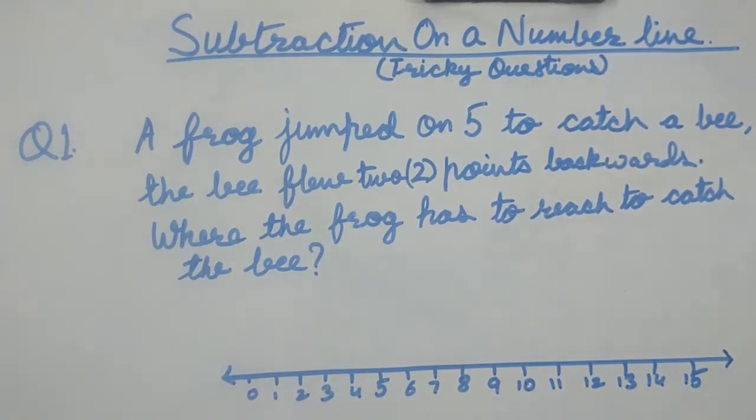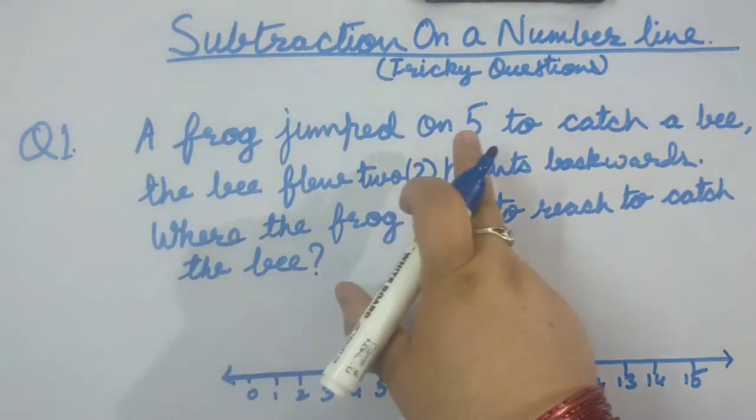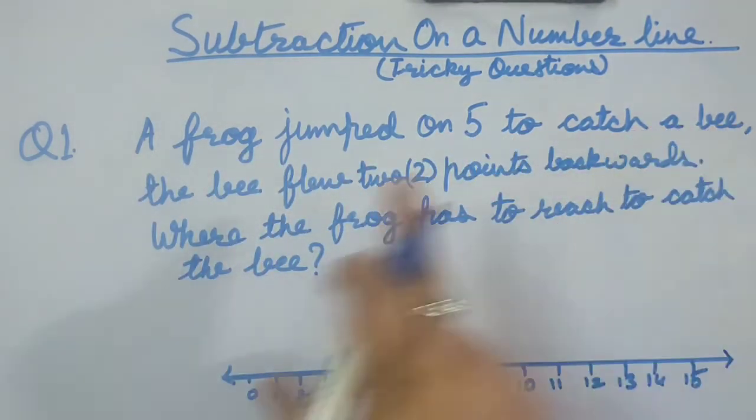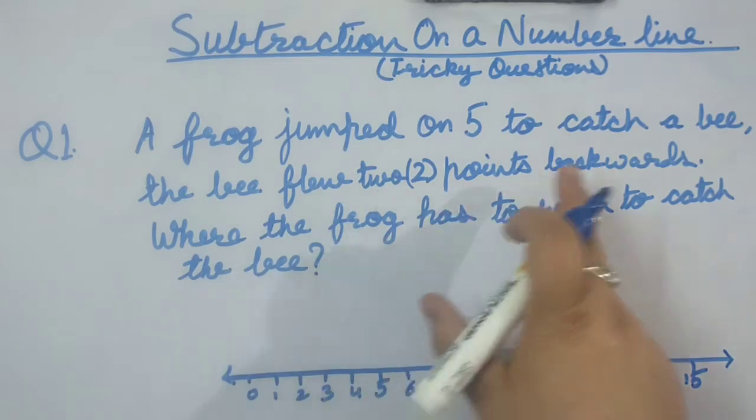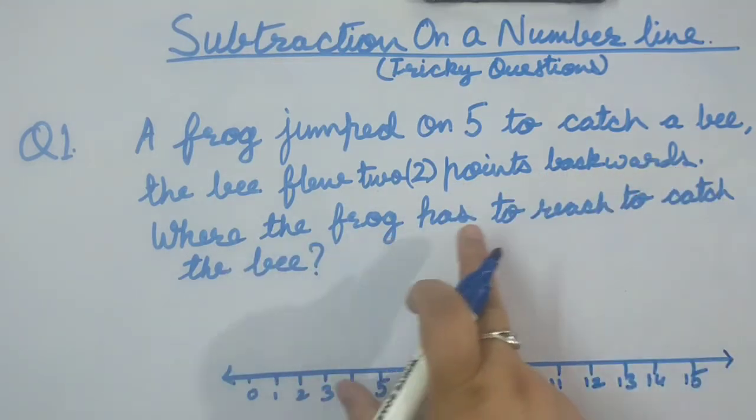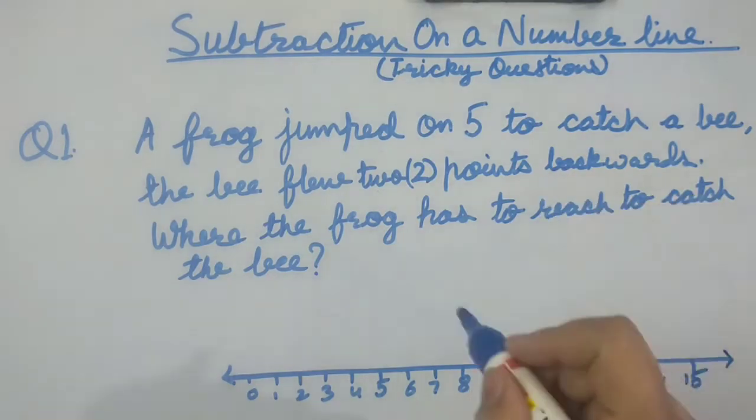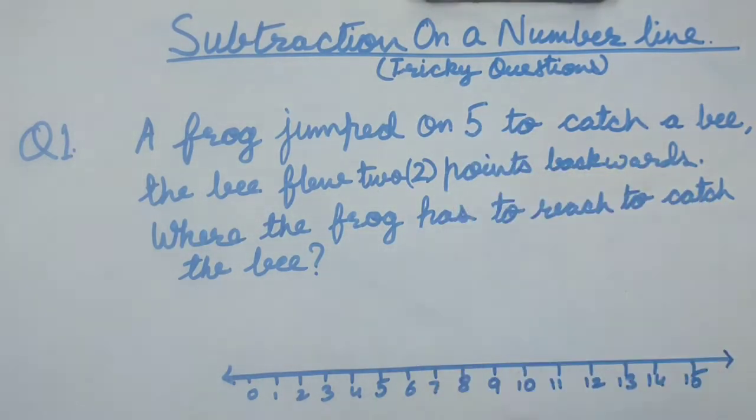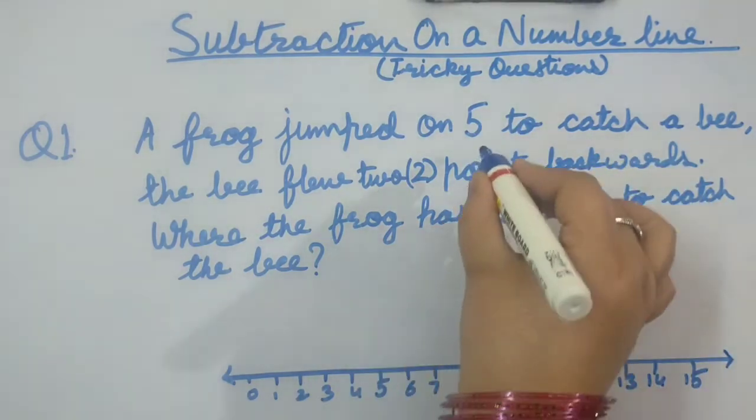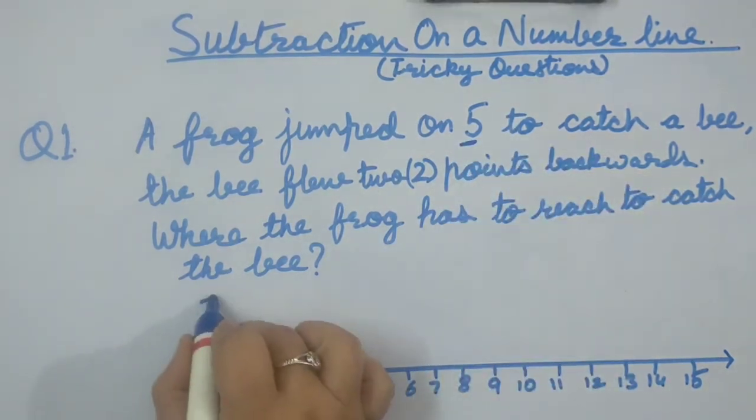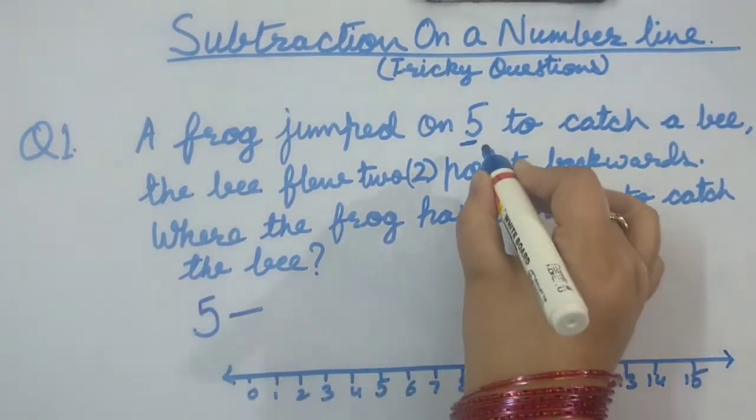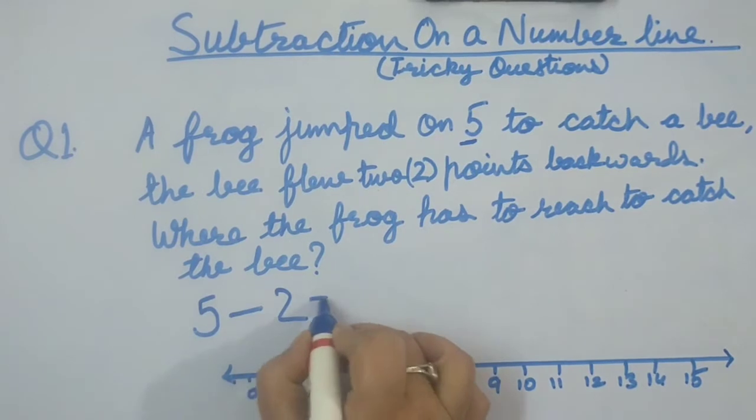Here is an example, question number 1. A frog jumped on 5 to catch a bee. The bee flew 2 points backwards where the frog has to reach to catch the bee. As we know, we need to take out the question from this, the smaller question. So the starting point will be 5. This means 5 minus 2 equals to dash.